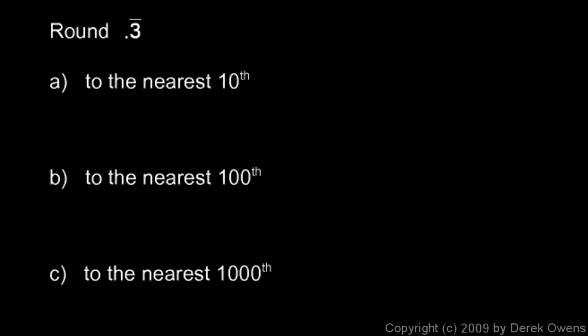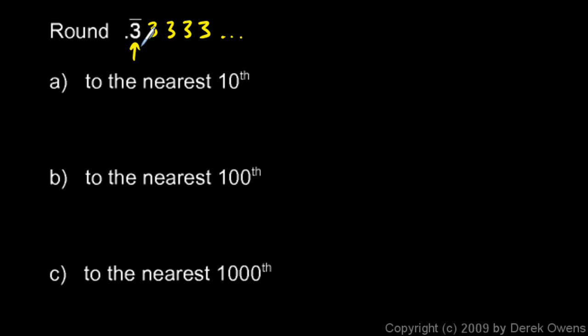Now we'll look at a repeating decimal. Round 0.3 repeating to the nearest tenth. We follow the rules for rounding — we just need to remember that 0.3 repeating is 0.333333... even though all those digits aren't shown. When rounding to the nearest tenth, that's the first digit after the decimal, so we look at the next digit. The next digit is a 3 because the threes go on forever — it's not 5 or higher, so we don't round up.